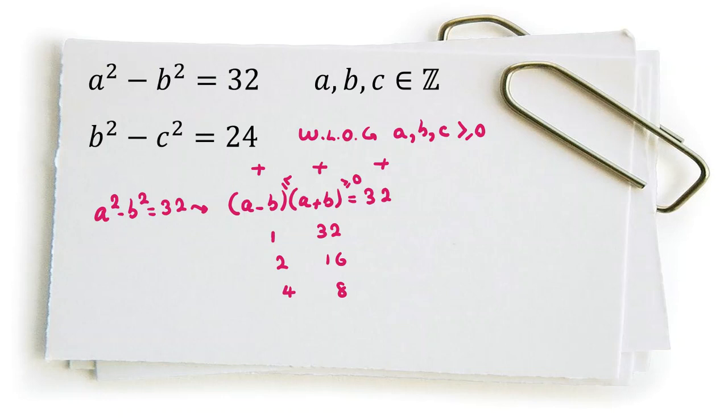So let's consider the first case. If we add a minus b plus a plus b, b and negative b will be canceled. 2a equals 1 plus 32, which is 33. It's not possible. In the second case, if we do the same thing, 2a equals 2 plus 16, which is 18, so a equals 9. For the third case, 2a equals 12, so a equals 6.